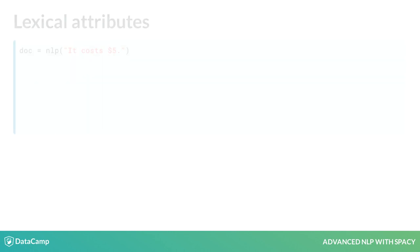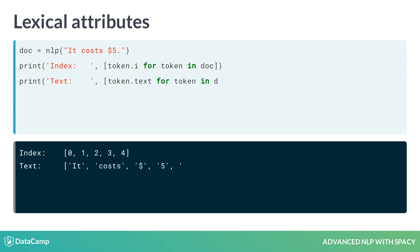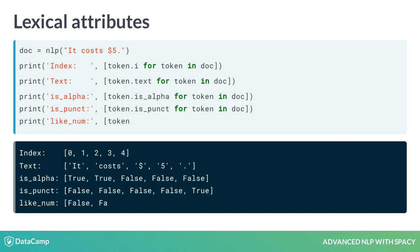Here you can see some of the available token attributes. I is the index of the token within the parent document. Text returns the token text. isAlpha, isPunct, and likeNum return boolean values, indicating whether the token consists of alphanumeric characters, whether it's punctuation, or whether it resembles a number.